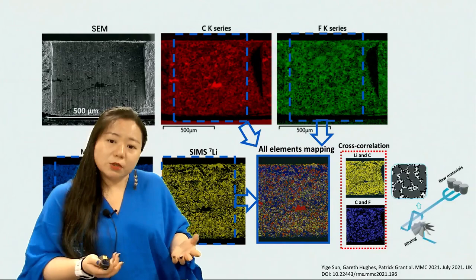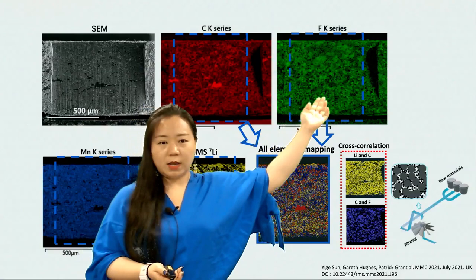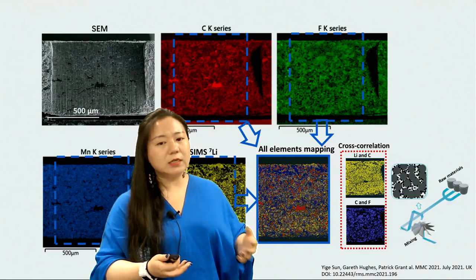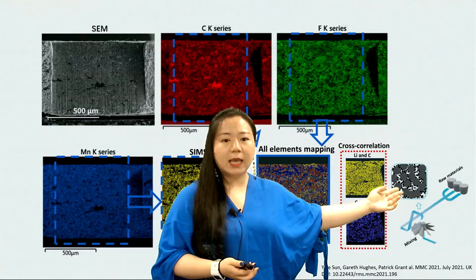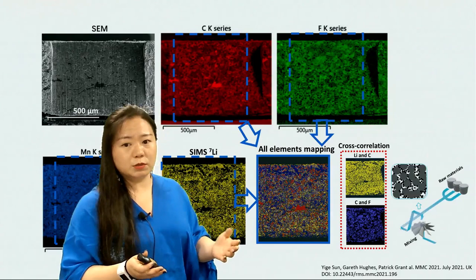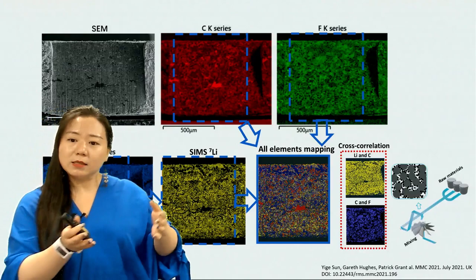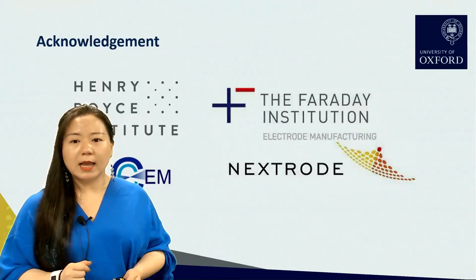What is interesting is that where there is carbon-rich regions, it is not necessarily fluorine-rich. This indicates that in the first step of the manufacturing process, the mixture of carbon black and binders is not well mixed. This methodology could therefore be used to make a connection between the industrial manufacturing process and electrode engineering in real-life applications.